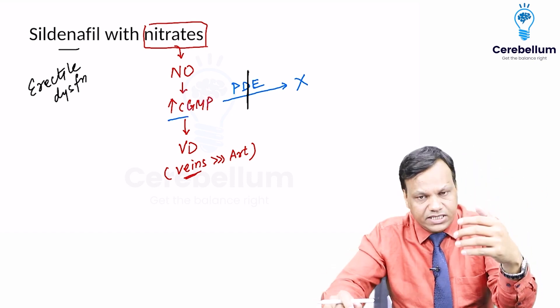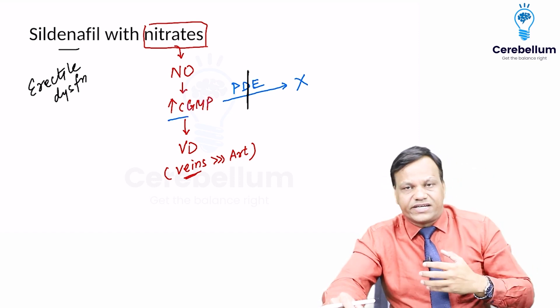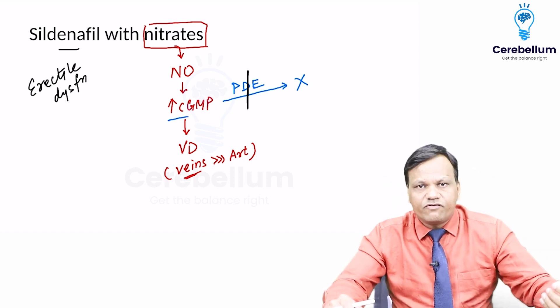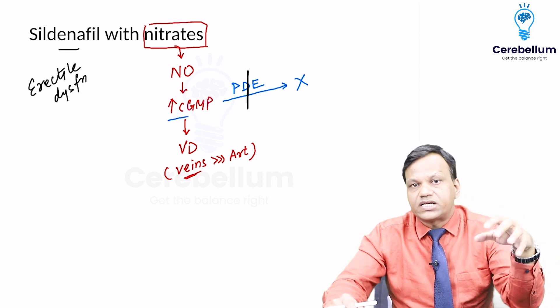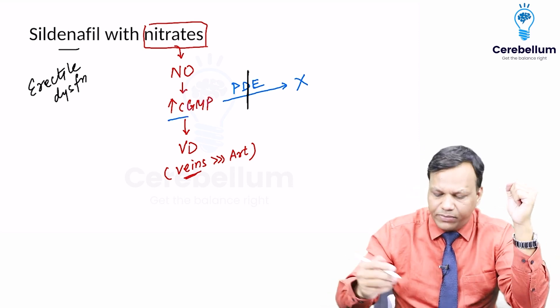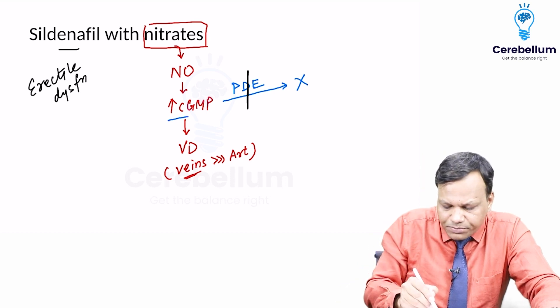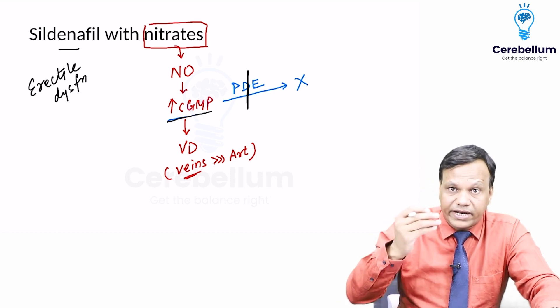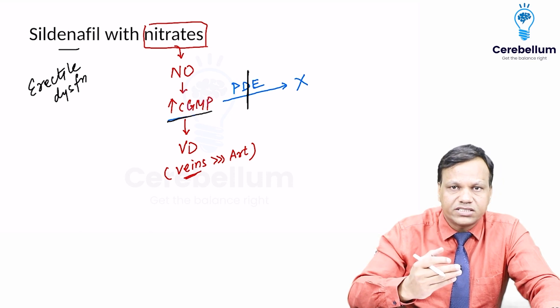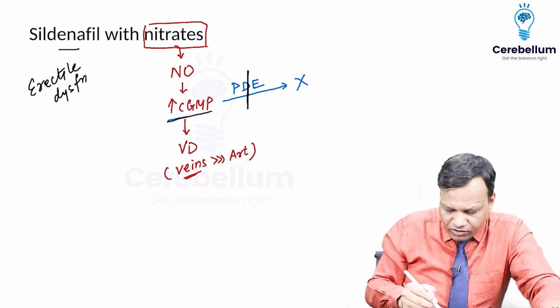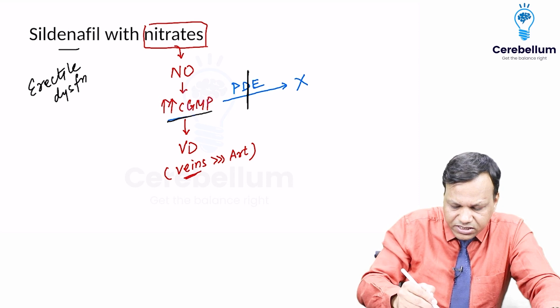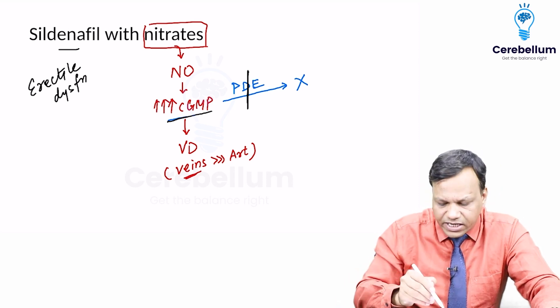Now, a person is having angina and is taking nitrates daily. One day for erectile dysfunction, the person takes sildenafil also. What will happen? Sildenafil inhibits phosphodiesterase, so cyclic GMP cannot be broken. Nitrates are already producing a lot of cyclic GMP that cannot be broken, so the level of cyclic GMP increases significantly.